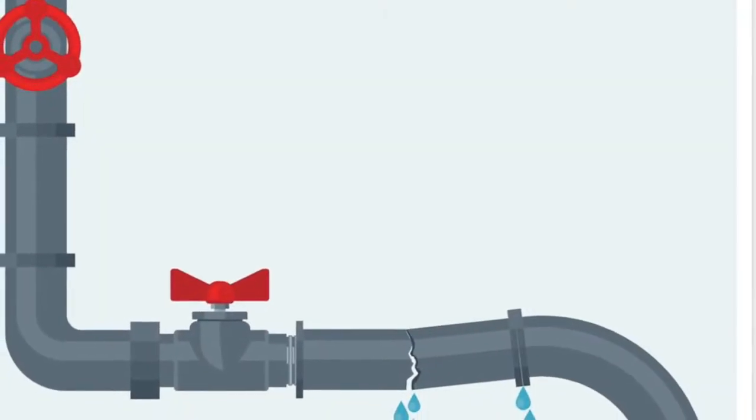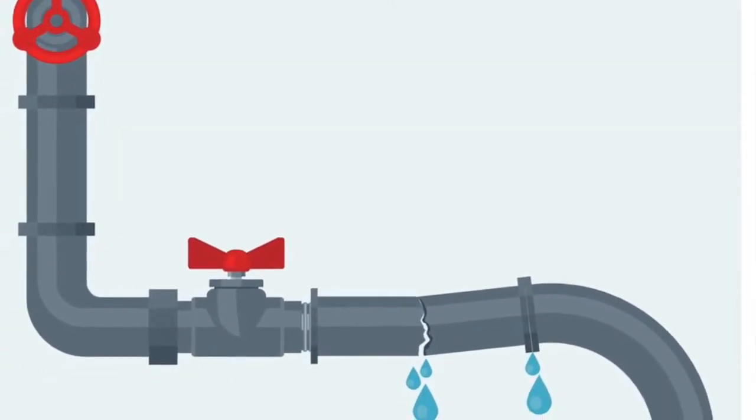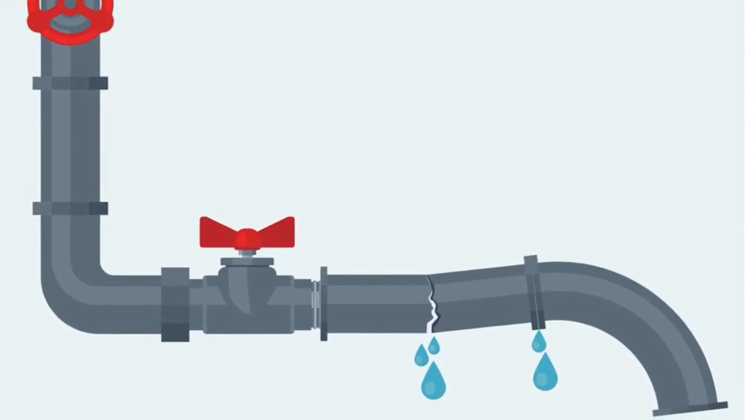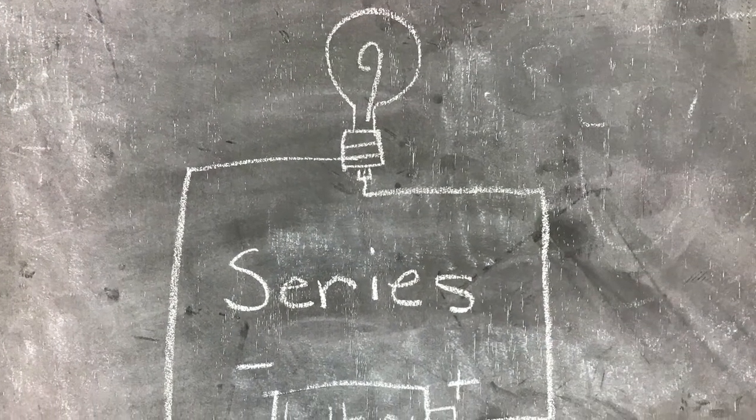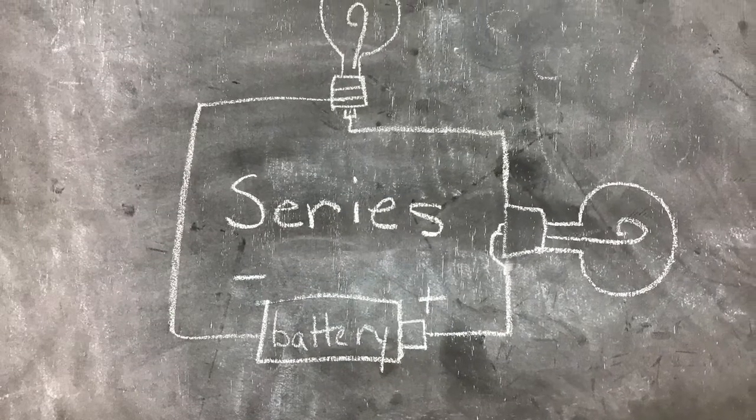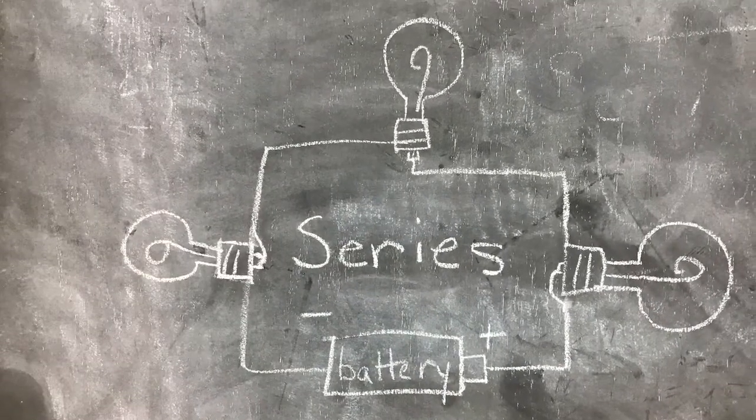An easy way to think of electricity is to think of water flowing through pipes. In a series circuit there is only one line that runs the electricity and everything can hook in to that one line.